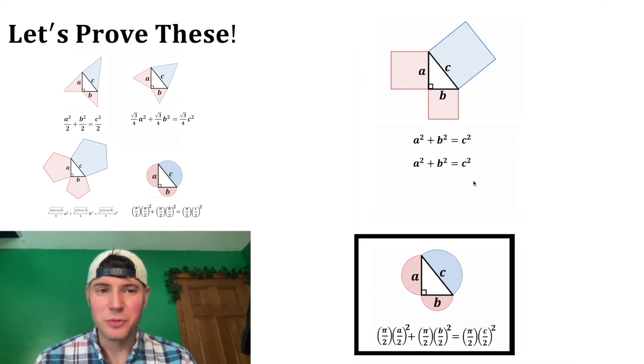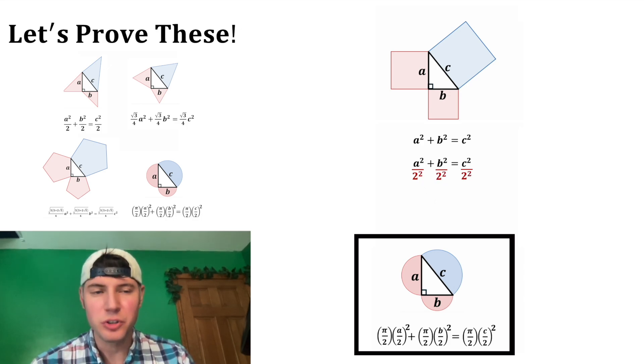We start with a squared plus b squared equals c squared, and then we'll divide both sides of the equation by 4. And then on the left side, this 4 can be split to the two terms. We can rewrite each of these 4s as 2 squared. Now looking at this a squared over 2 squared, we can rewrite this as a over 2, the whole thing squared. And the same thing as b squared over 2 squared, that can be rewritten as b over 2 squared. And we can do the same thing to this, it'd be c over 2 squared.